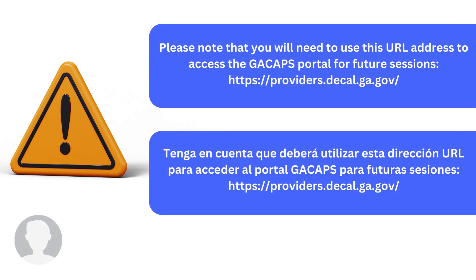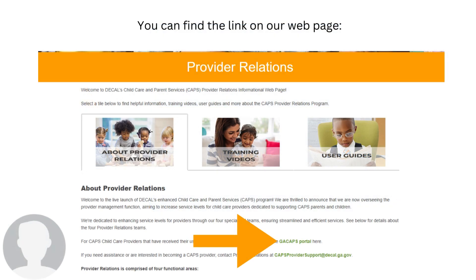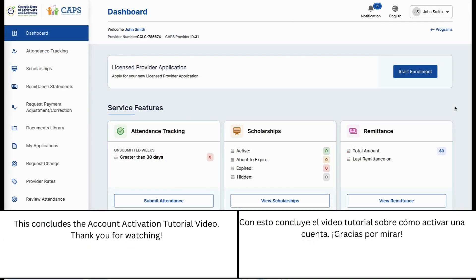Please note that you will need to use this URL address to access the Georgia CAPS portal for future sessions: providers.decal.ga.gov. You can also find the link to the Georgia CAPS portal on our web page. This concludes the account activation tutorial video. Thank you for watching.